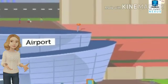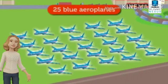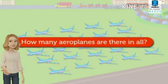In an airport, there are 14 yellow aeroplanes and 25 blue aeroplanes. So, how many aeroplanes are there in all?